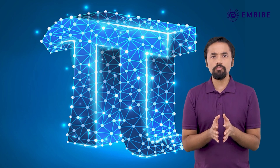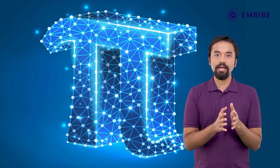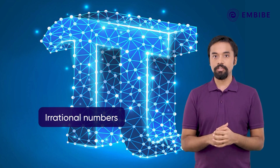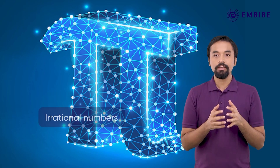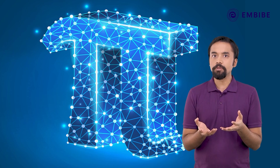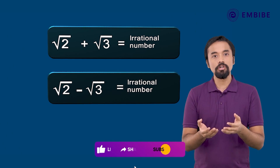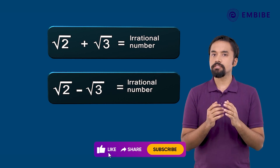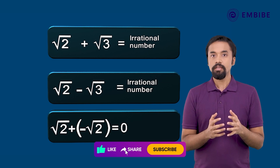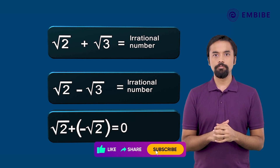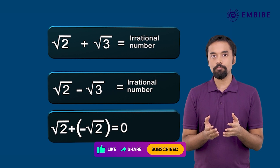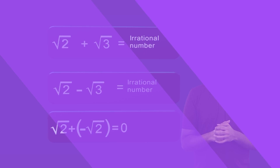Mathematicians are always looking for patterns, even in the irrational numbers. Irrational numbers don't repeat or terminate, but sometimes form certain patterns, or else they are just random numbers. Let's discuss properties of irrational numbers.